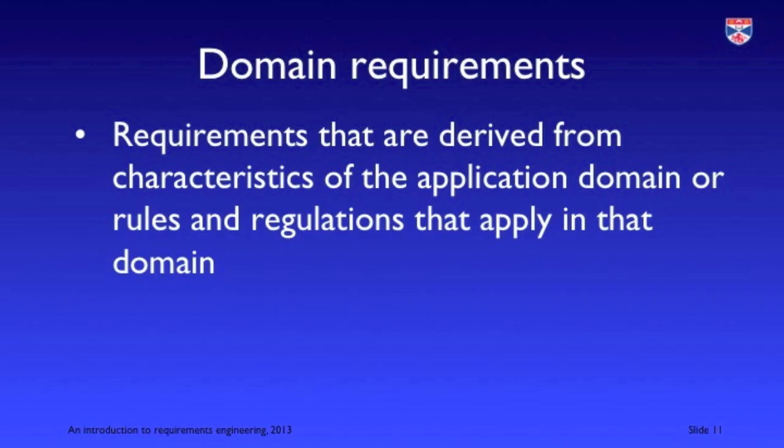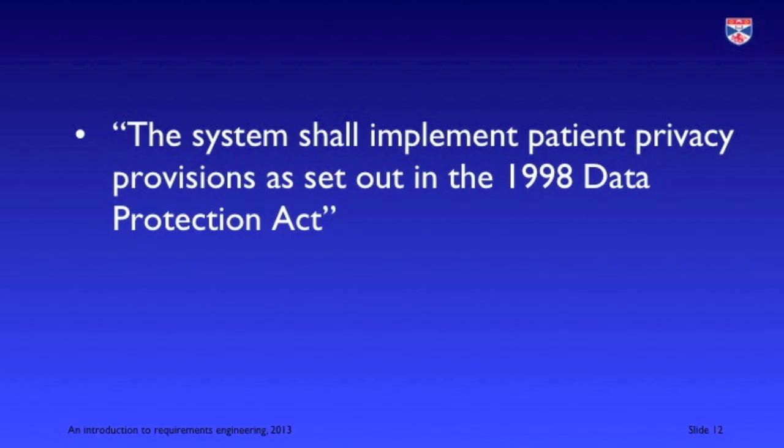A domain requirement is something different from a non-functional requirement — it comes from the application domain, something inherent in that domain. In a medical domain, an example is the privacy requirement. It's very important in medical systems that patient privacy is maintained, and in Europe data protection acts in all countries place this into law. So a privacy requirement might state that the system must be conformant with the data protection laws.